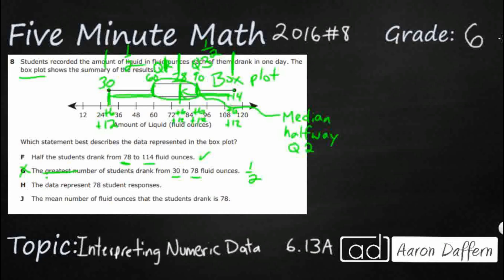The data represent 78 student responses. We have no idea how many student responses are in here. 78 is our magic number because that is our median. It's halfway through. But that is definitely not the amount of responses. That's just the midpoint of our data.